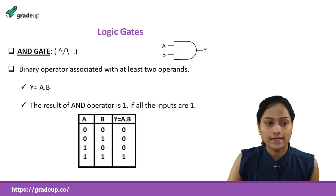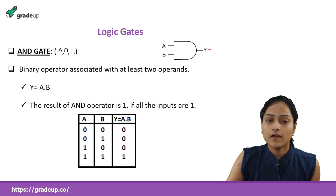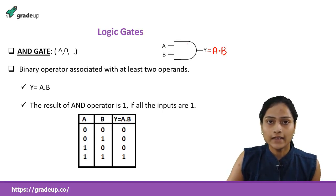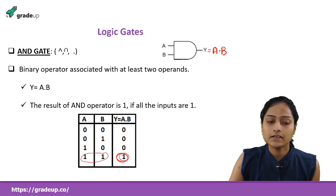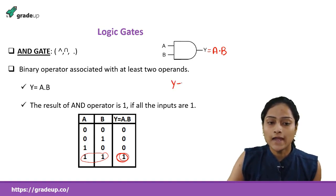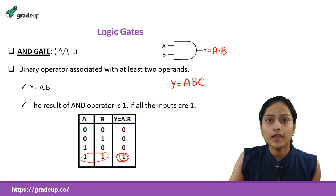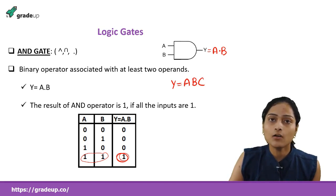The AND gate is represented by a dot, with equation Y = A · B. This AND gate is also a binary operator — you have to give at least two operands for performing the operation. The AND gate results in 1 only when both inputs are 1; otherwise it gives 0. If you have three inputs, all three must be 1 to get an output of 1.